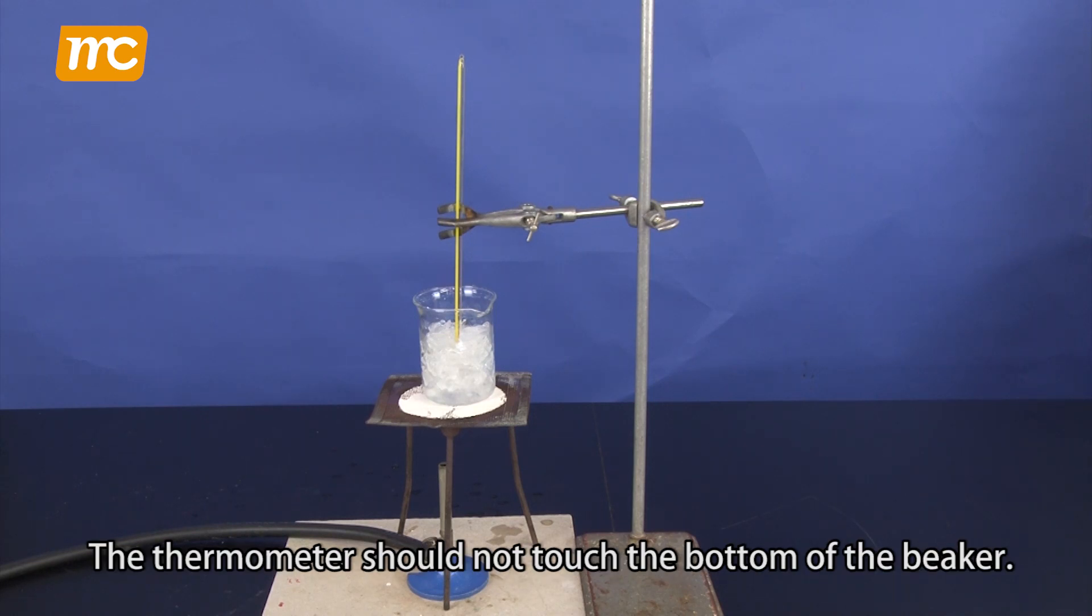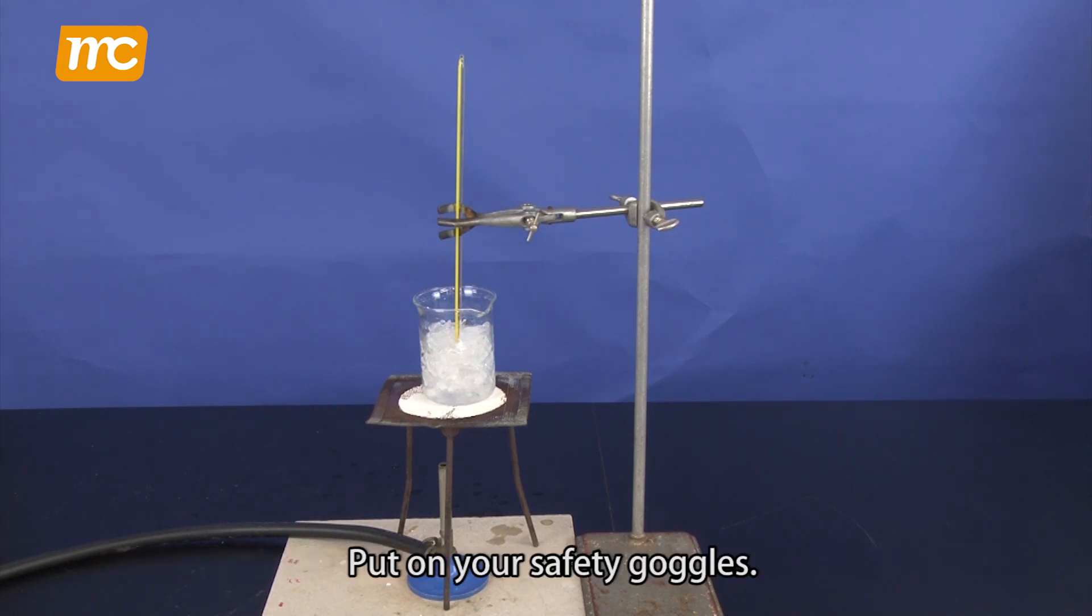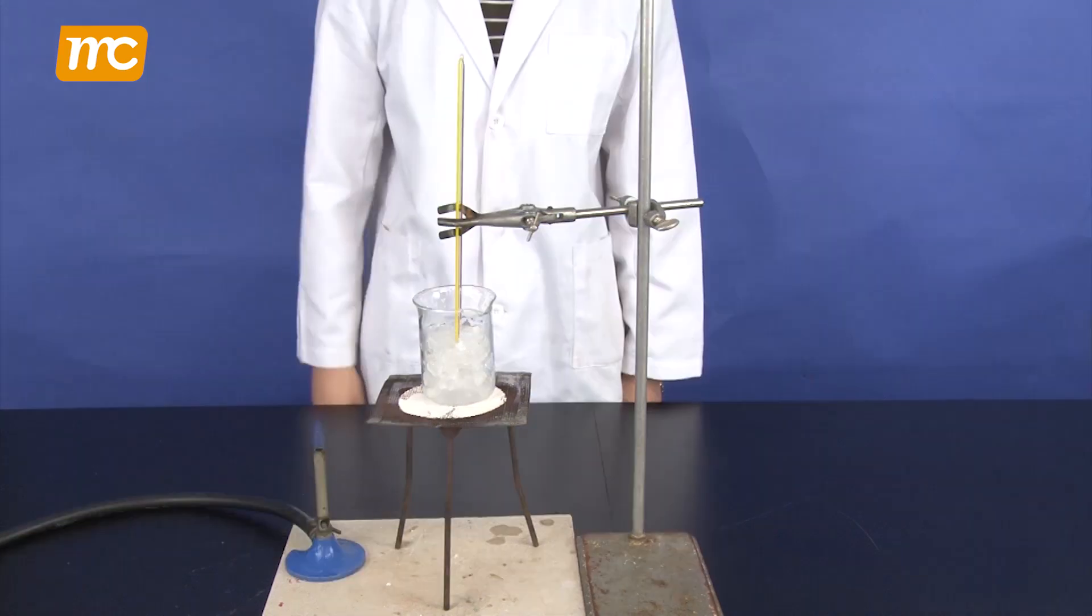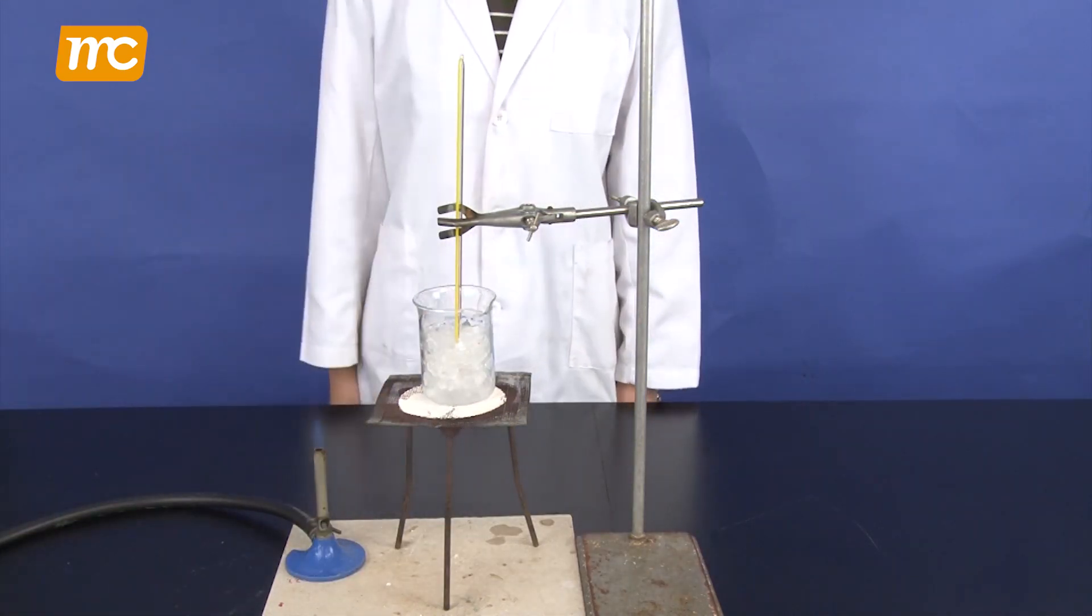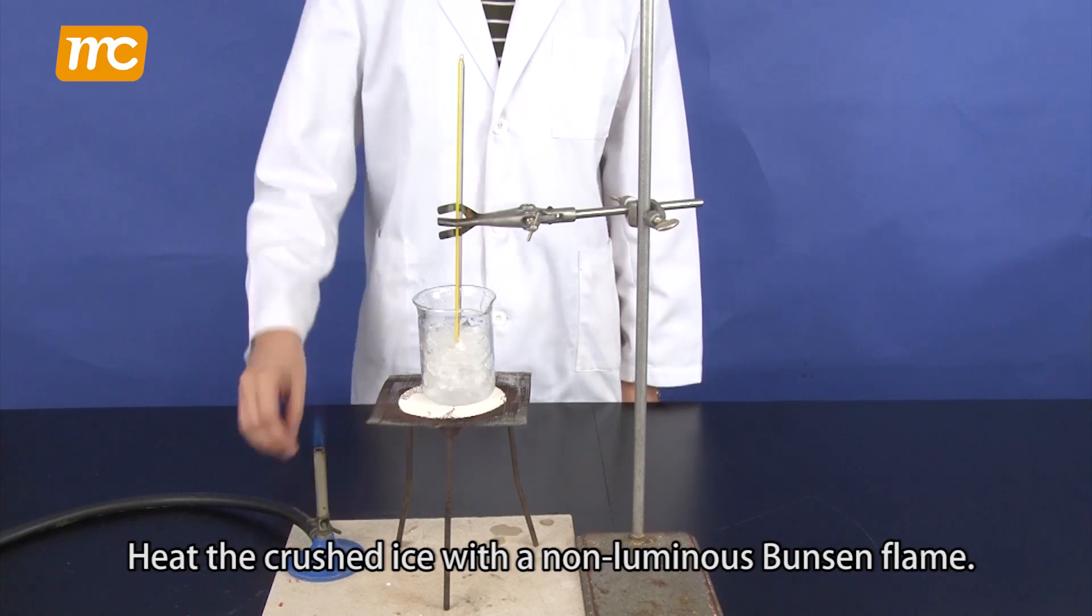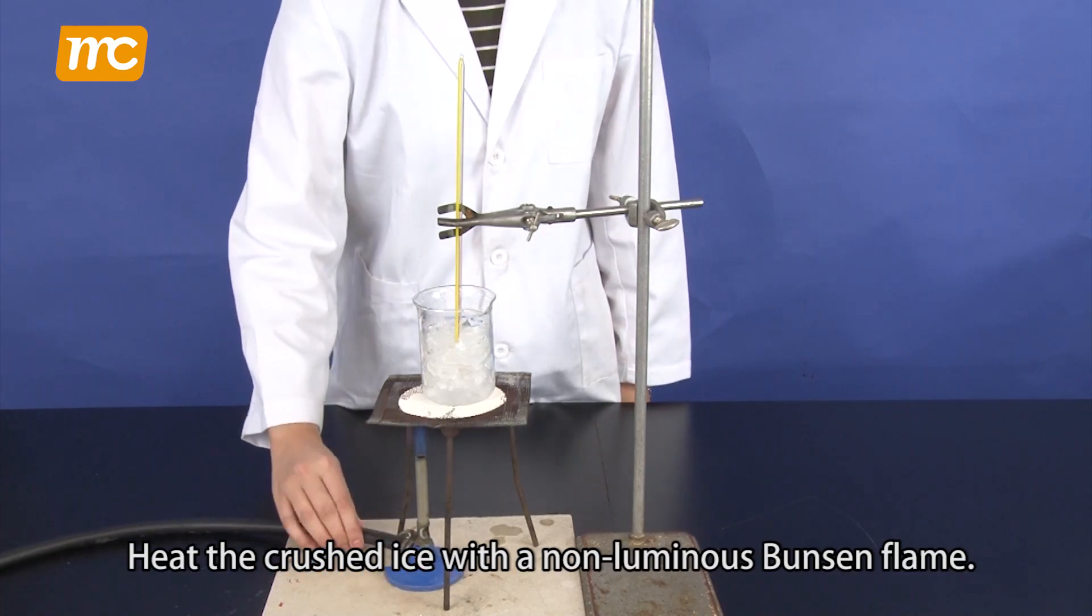The thermometer should not touch the bottom of the beaker. Put on your safety goggles. Heat the crushed ice with a non-luminous Bunsen flame.